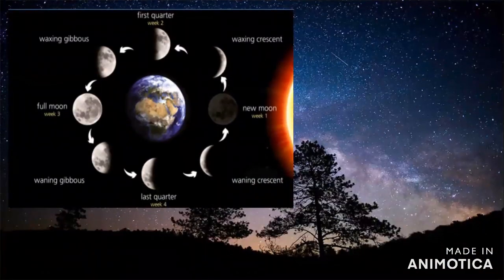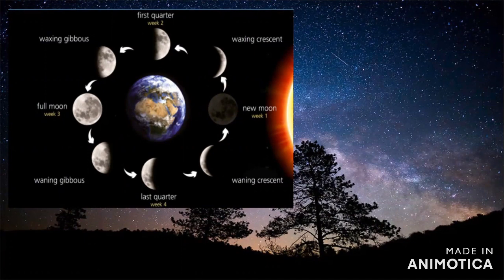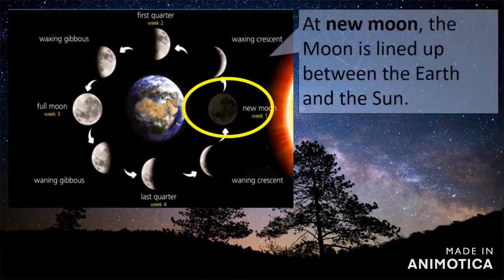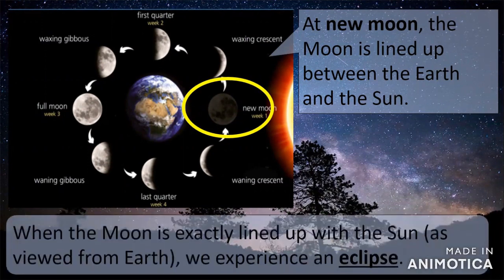The first phase is the new moon. At new moon, the moon is lined up between the earth and the sun, and we see the side of the moon that is not being lit by the sun. When the moon is exactly lined up with the sun as viewed from earth, we experience an eclipse — we'll talk about that later. Now let's proceed to the second phase.